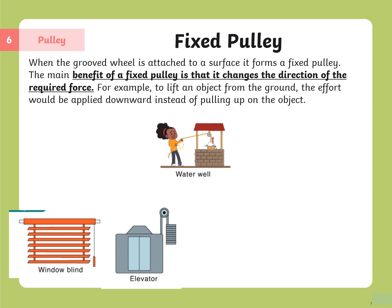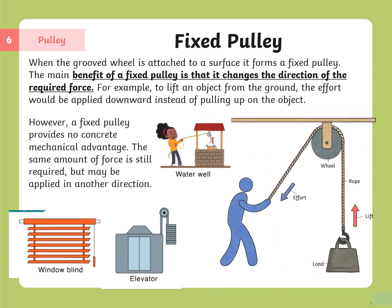Examples of fixed pulleys include a water well — where you draw the rope downwards and the bucket is pulled up — window blinds, and an elevator or lift. However, a fixed pulley provides no concrete mechanical advantage; the same amount of force is still required, but may be applied in a different direction — instead of lifting the object, you are pulling it down.